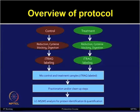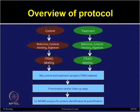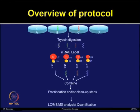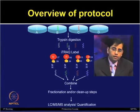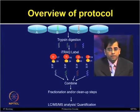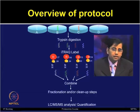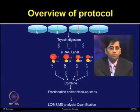Let us look at the overview of this protocol. We have control and treatment populations; each of those samples is first reduced, cysteine blocked, and digested. After that, iTRAQ labeling is performed for each sample. Then control and treatment populations are all mixed together with the iTRAQ labels, fractionation and cleanup steps are performed, and then LC-MS/MS analysis can be performed for protein identification and quantification. In the image shown, you have four different populations A, B, C, and D; each is reduced, cysteine blocked, trypsin digested, and labeled with the four different iTRAQ labels, then combined, fractionated, and LC-MS analysis is performed to obtain quantitation.